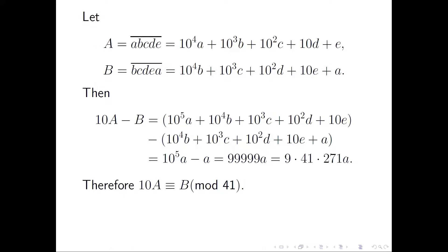Therefore, 10A is congruent with B modular 41. So A is divisible by 41 if and only if 10A is divisible by 41, because 10 is relatively prime to 41.